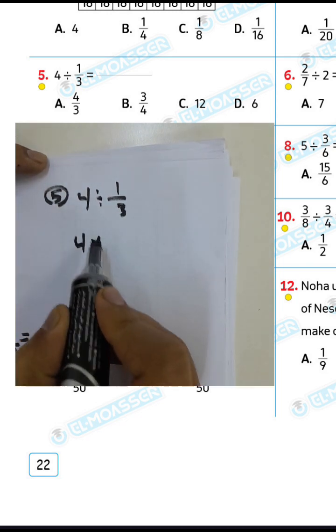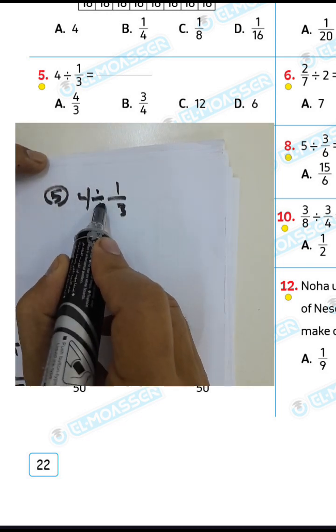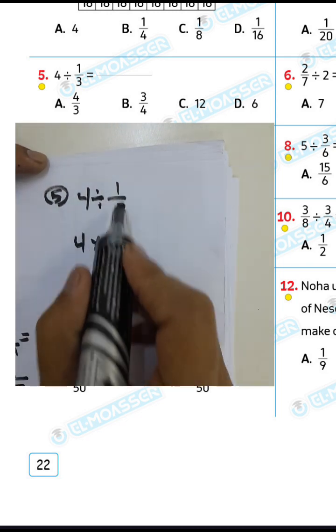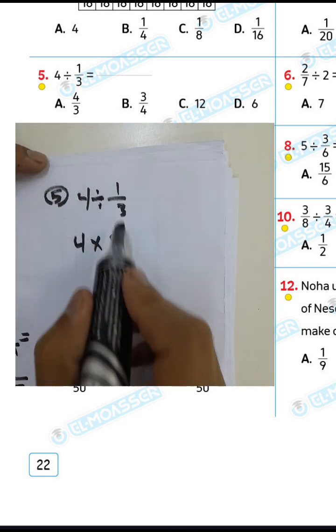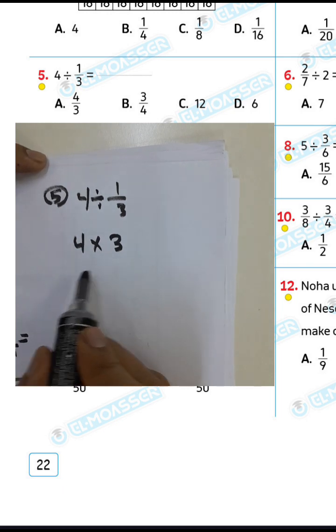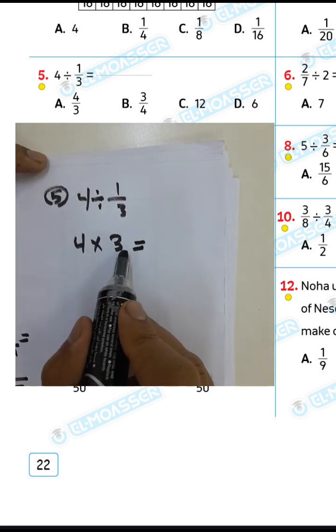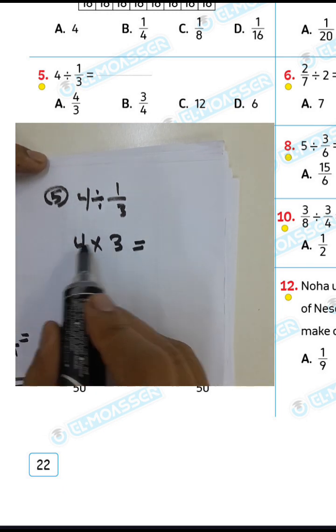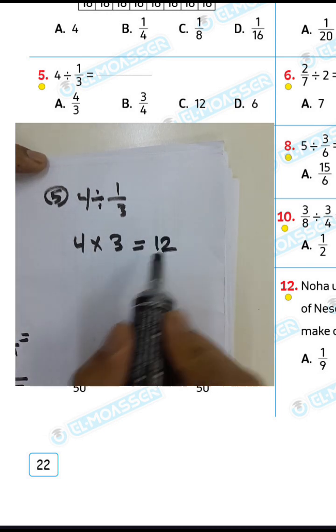Question number 5: 4 divided by 1/3. You can write 4 and convert from division to multiplication, then raise the inverse of 1/3, which is 3 over 1. So 1/3 times 4 equals 12.